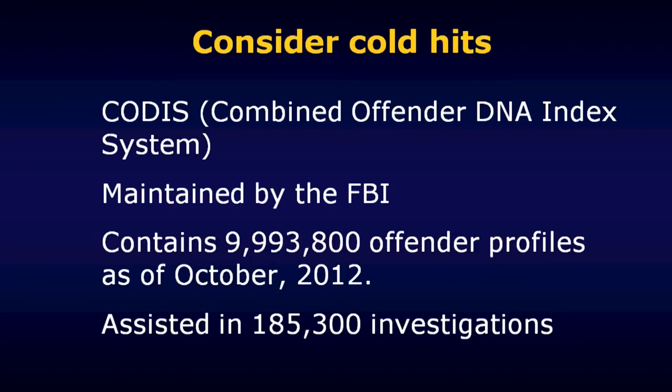The one big database that pertains most to forensic use within the United States is known as the CODIS database. CODIS is short for the Combined Offender DNA Index System. It's a database maintained by the Federal Bureau of Investigation, and as of October 2012, just short of 10 million DNA profiles have been stored within CODIS. These 10 million individuals have all been convicted of felonies within the United States—that's the one sure way to get entered into the CODIS database.